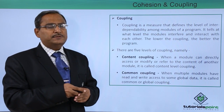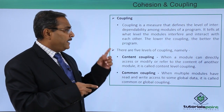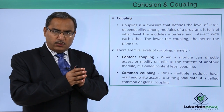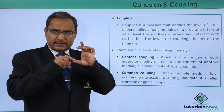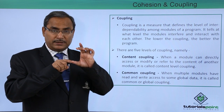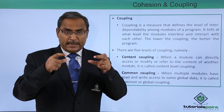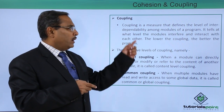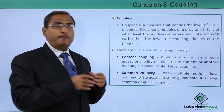Having discussed all cohesion types, let us now discuss coupling. Coupling is a measure that defines the level of interdependability among the modules of a program. While cohesion deals with what is within a single module, coupling deals with the interdependability between two or more modules. It tells at what level the modules interfere and interact with each other, and the lower the coupling, the better the program.